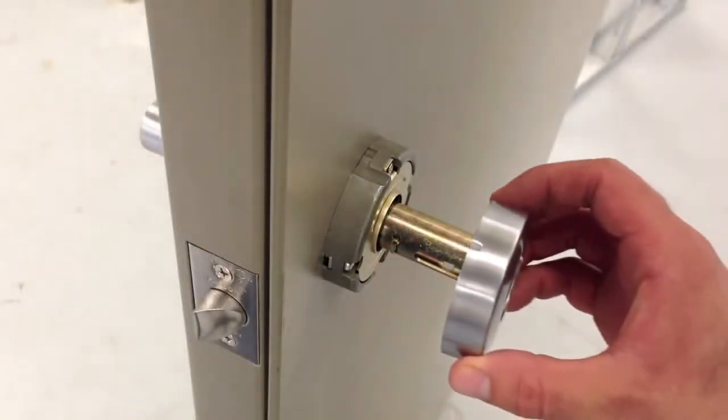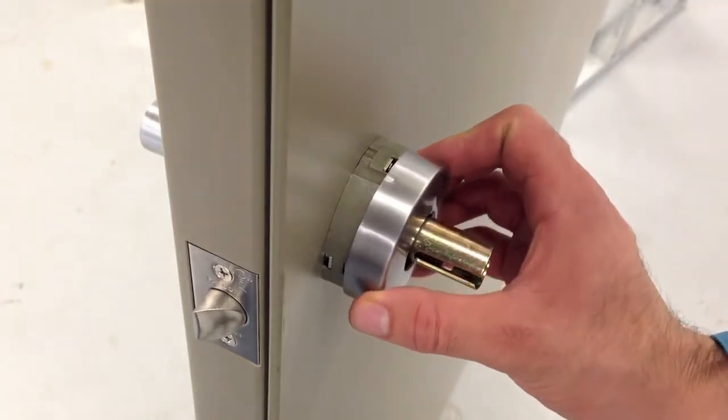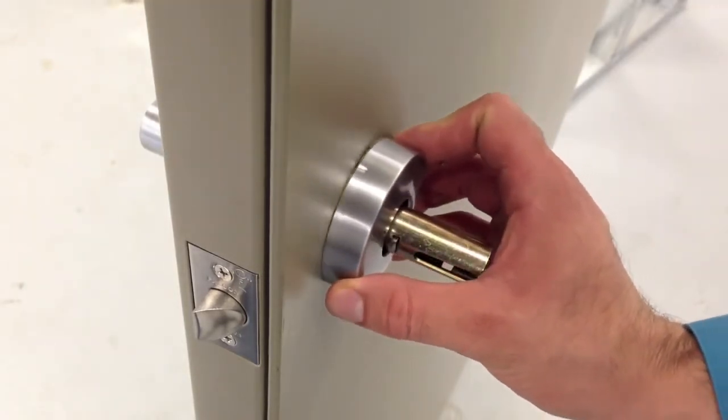To install the inside rose, align the groove on the top of the spring cage with the dimple on the rose. Rotate clockwise to tighten.